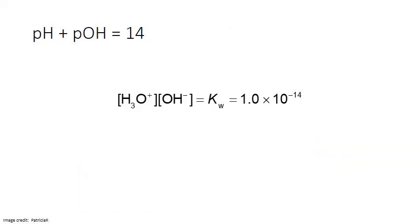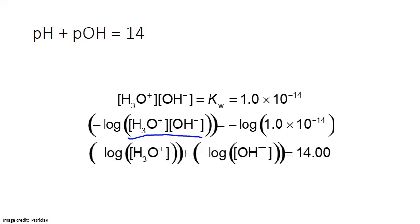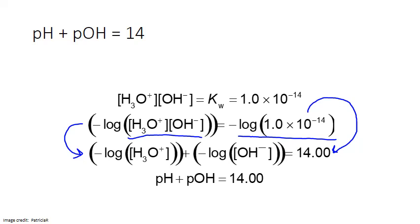The ion product expression for the autoionization of water can also be used to derive the relationship between pH and pOH. Since both are simply the negative log of their respective ion concentrations, we can take the negative log of both sides of the expression. The negative log of a product of two values equals the sum of the negative logs of each individual value, so this becomes: negative log of hydronium plus negative log of hydroxide. On the right-hand side, the negative log of 1.0 times 10 to the negative 14 equals 14. Therefore, pH plus pOH equals 14.